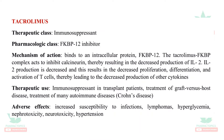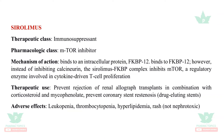Tacrolimus is also an immunosuppressant. It binds to FK-BP12 protein, and this complex inhibits calcineurin — the mechanism of action is very similar to cyclosporine. It reduces production of IL-2, resulting in decreased proliferation, differentiation, and activation of T-cells. It is used in transplant patients, treatment of graft versus host disease, and autoimmune diseases such as Crohn's disease. Adverse effects include increased susceptibility to infections, lymphomas, hyperglycemia, nephrotoxicity, neurotoxicity, and hypertension.